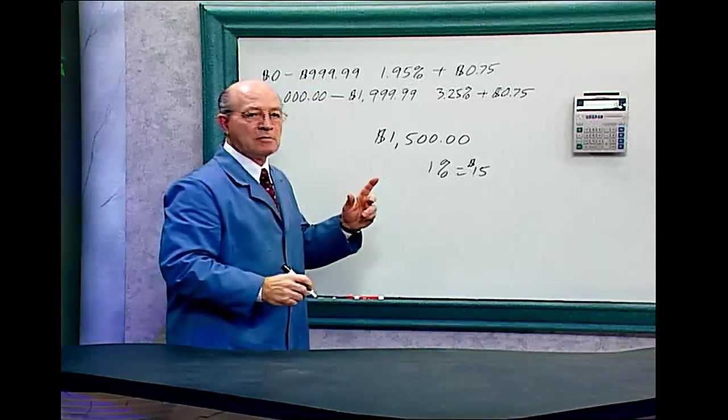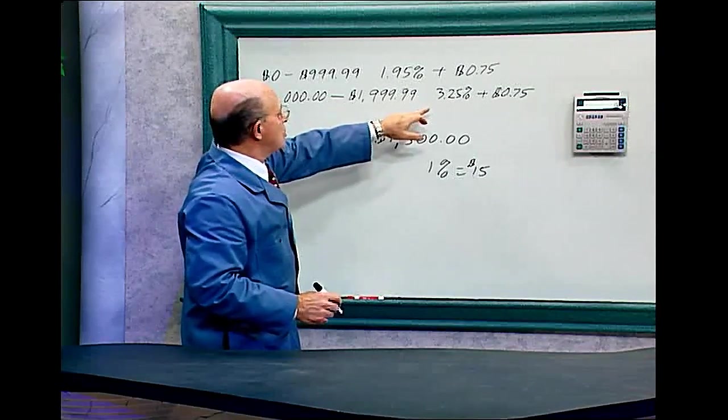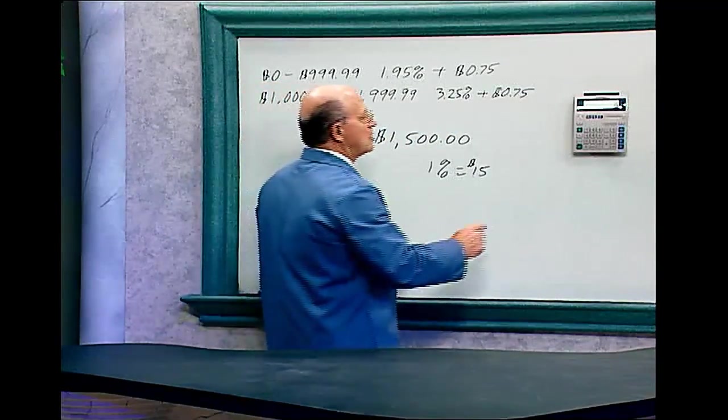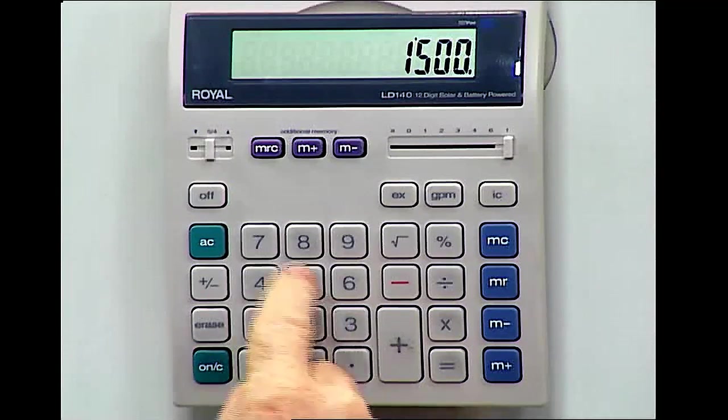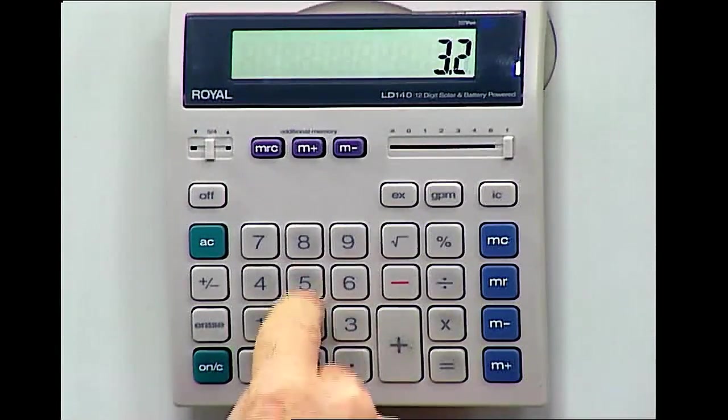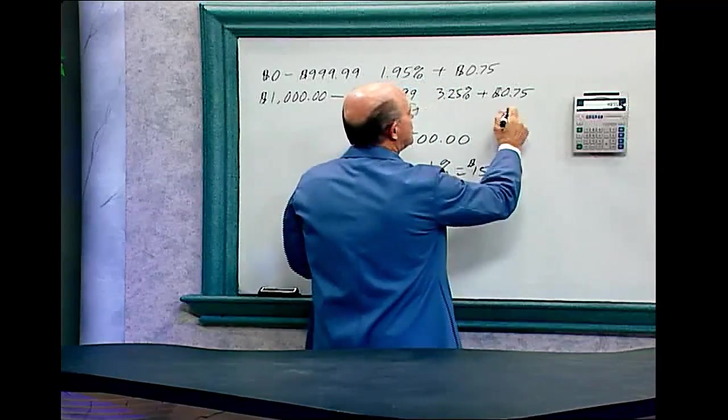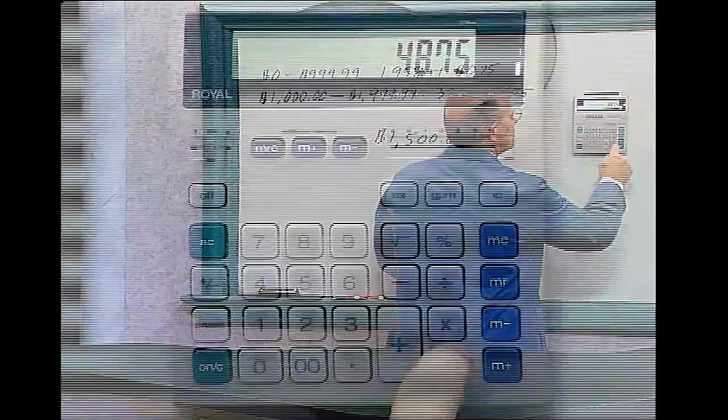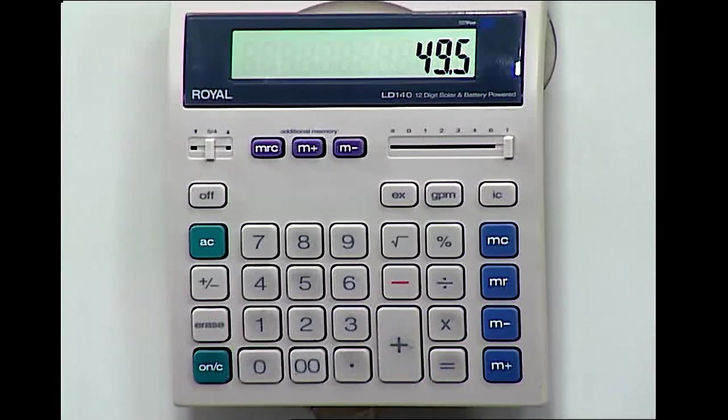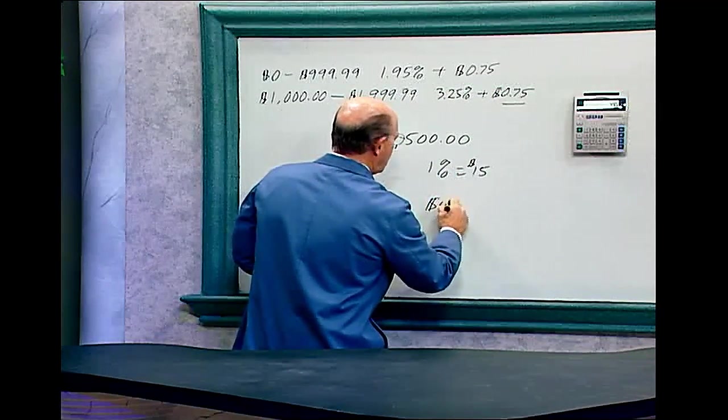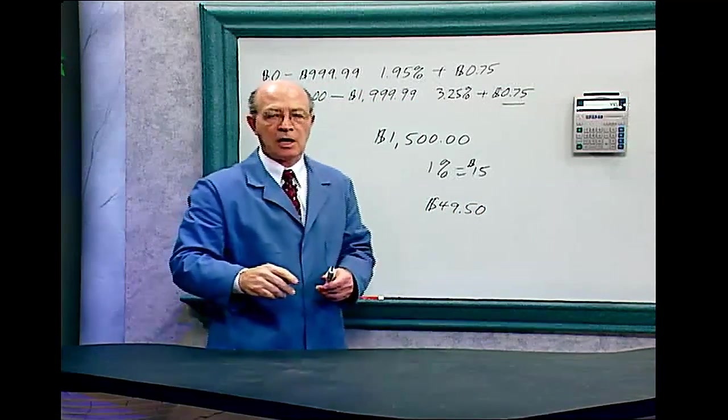But it's not 1%. Notice it falls into this category. So it's 3.25%. So 1,500 times 3.25% is $48.75 plus 75 cents equals $49.50. So it costs $49.50 to cash that check at Nick's.